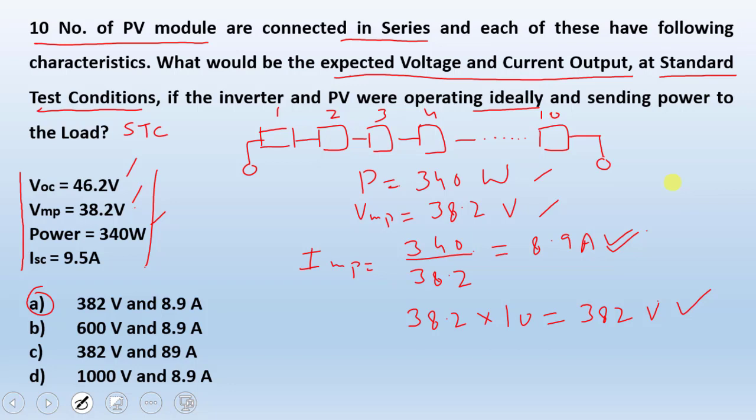So in order to find out the missing data like current or voltage, we must find out what are the standard conditions and what data is provided here. And simply with the given data, we can find out the missing parameter. In this case, we have found out 8.9 amperes current for the system and 382 voltage for the system voltage.